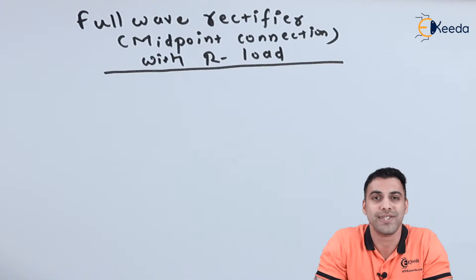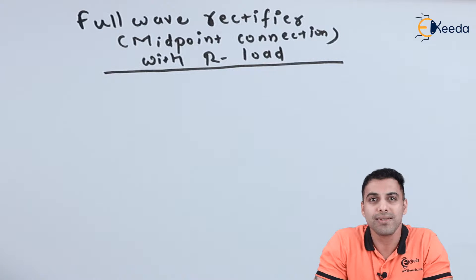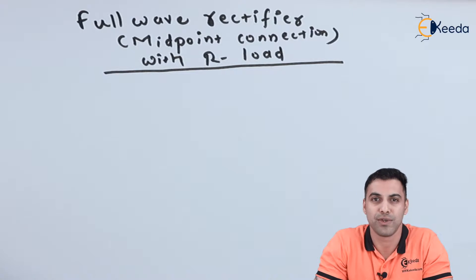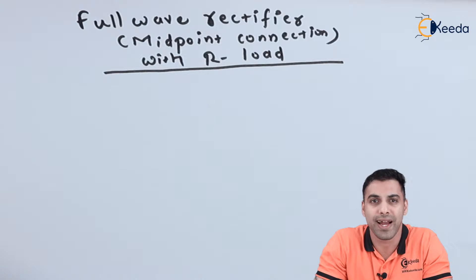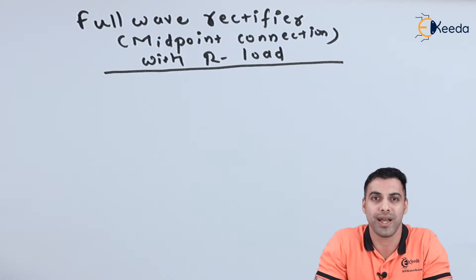With a full wave rectification with a midpoint connection and a resistive load connected across the output, we will be getting both the positive cycles and the negative cycles of the input AC supply. So let's directly draw the circuit diagram of a full wave rectifier with a midpoint connection with a resistive load connected.